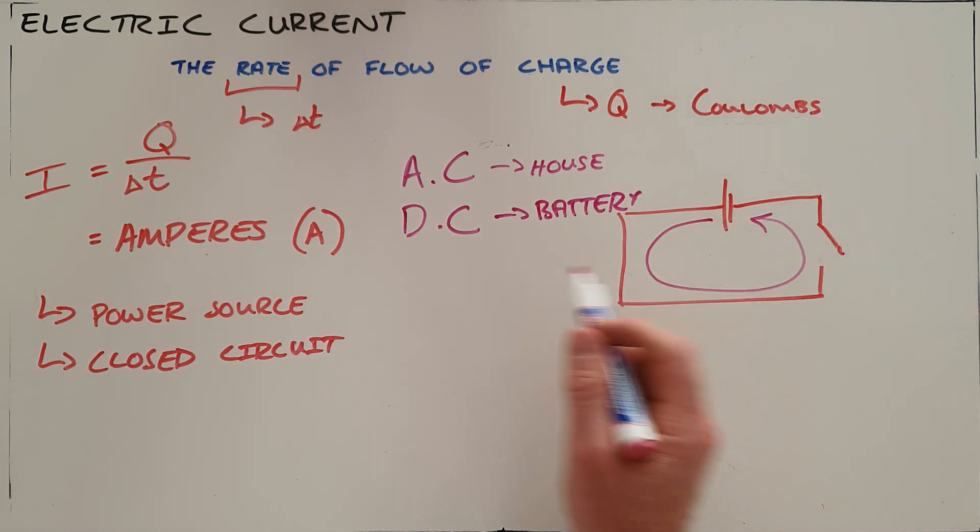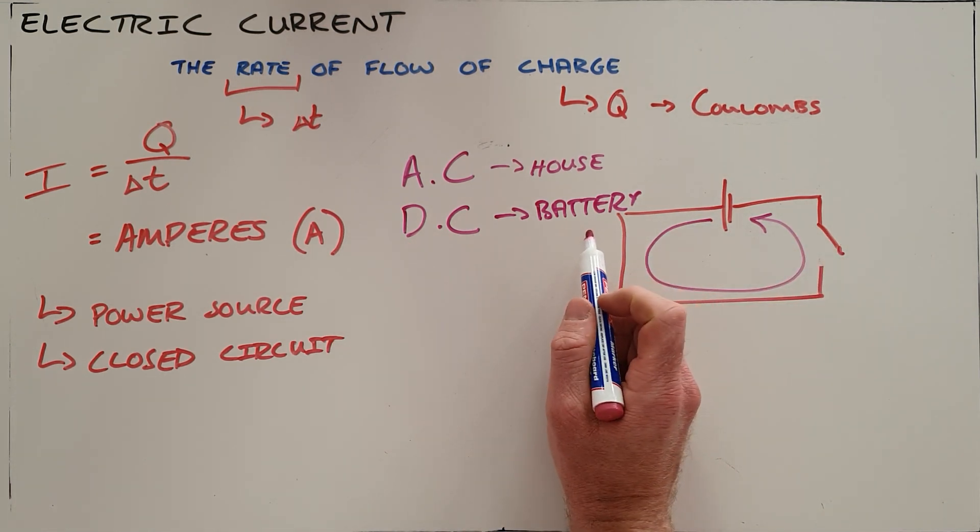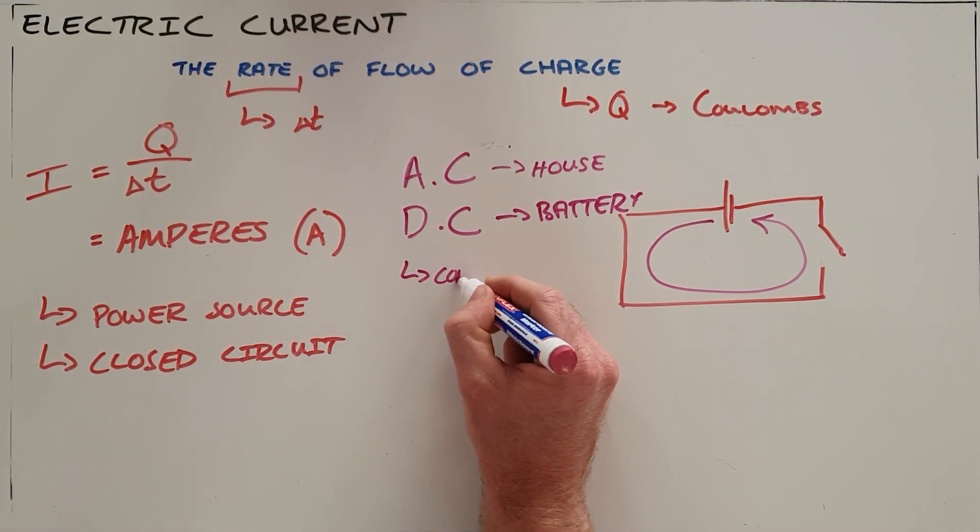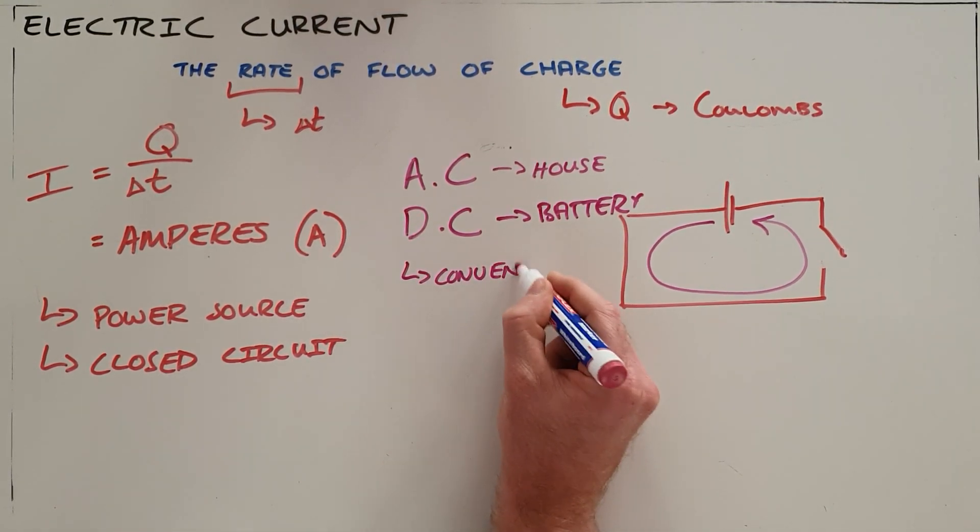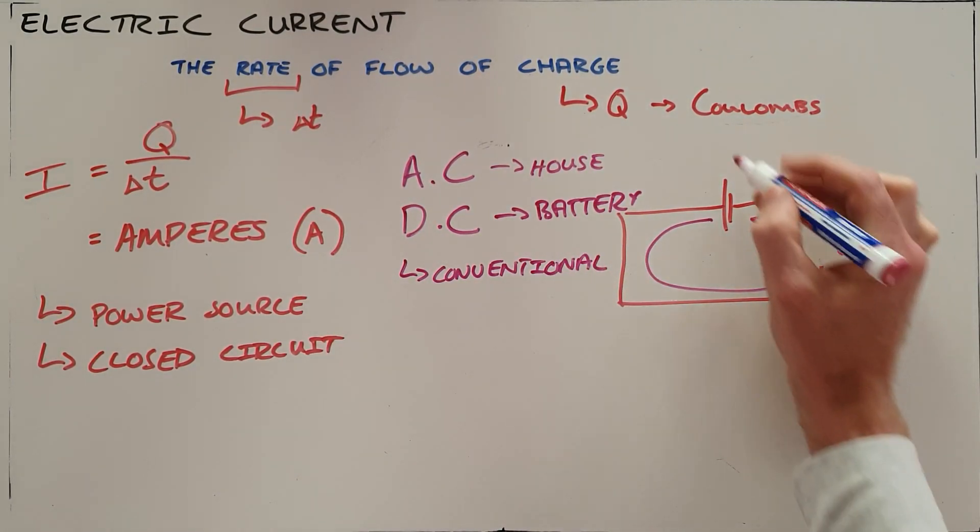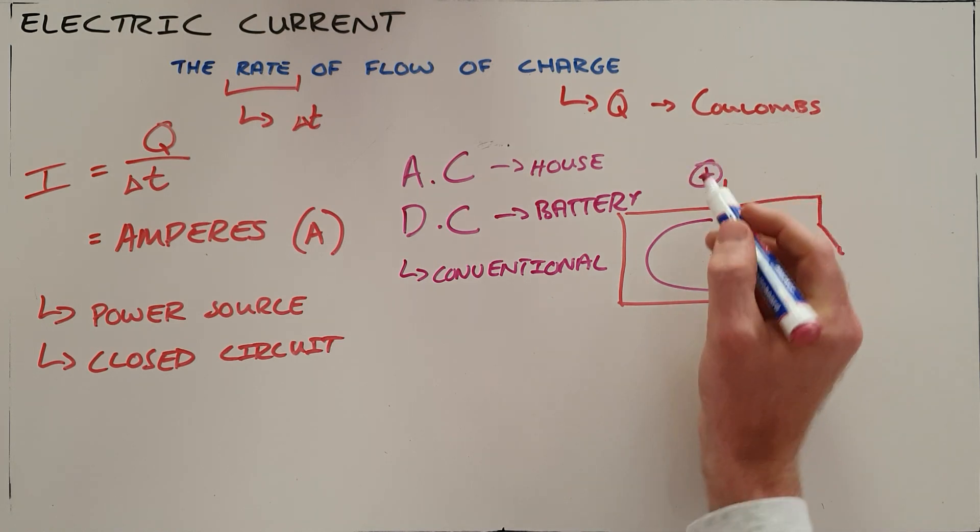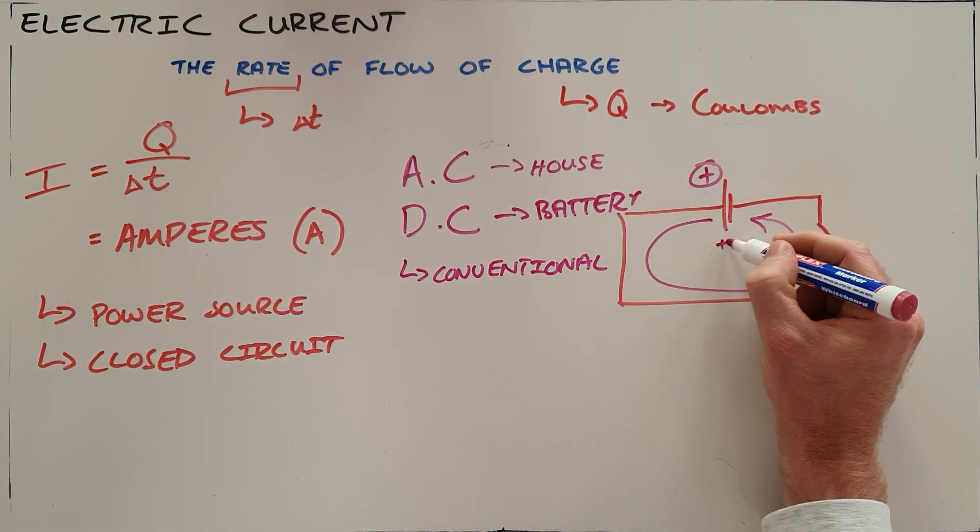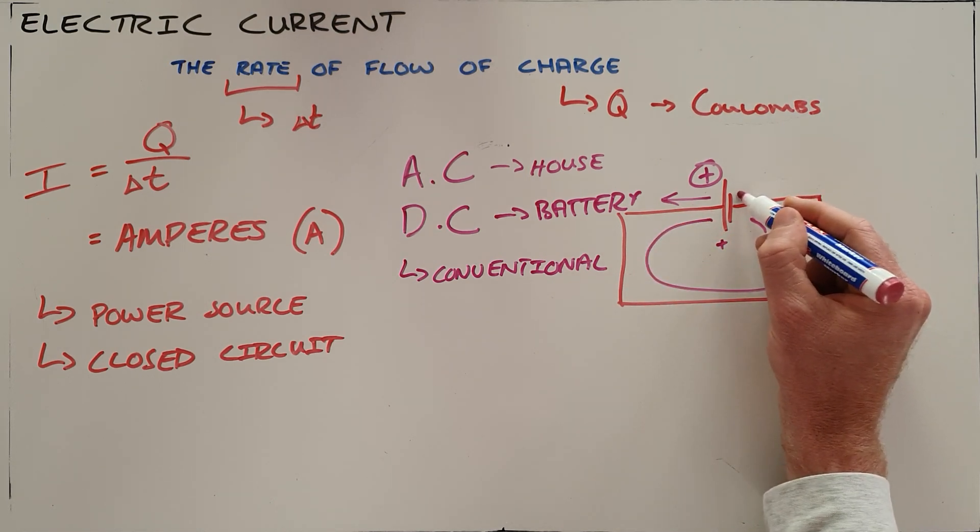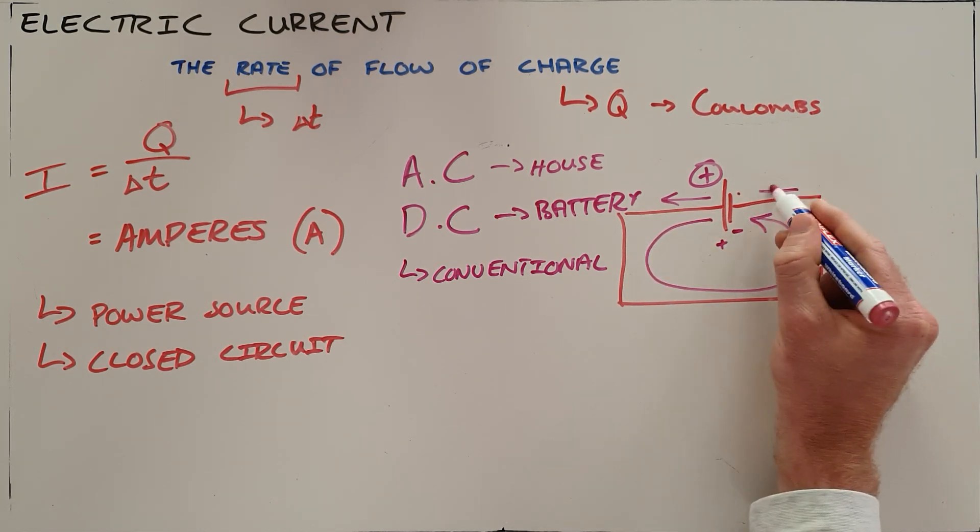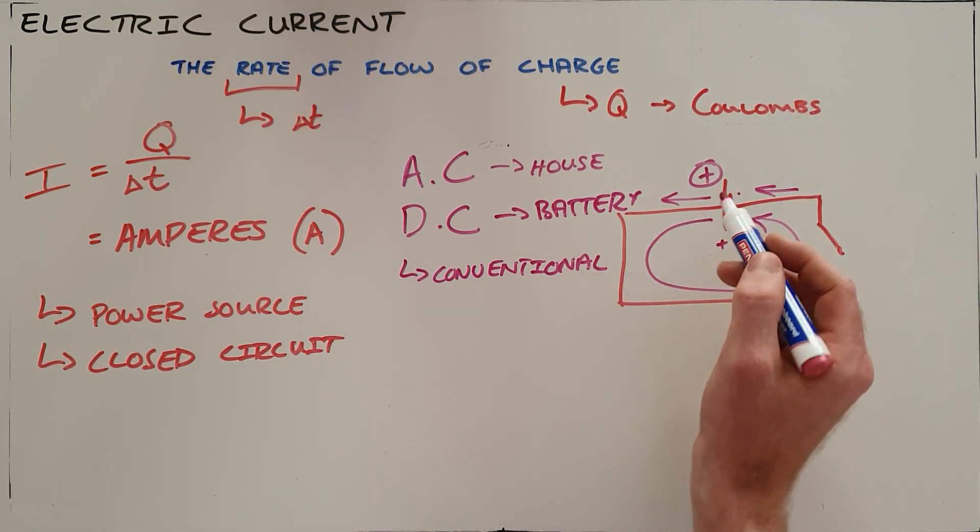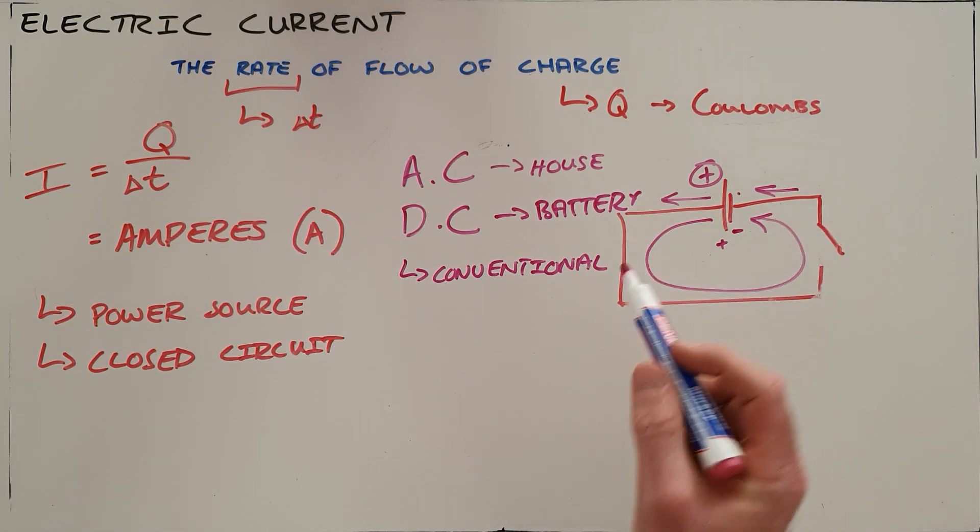In the electric circuits we deal with, we're going to be dealing with direct current. We'll often talk about conventional current, which is the original idea of what current was - the flow of positive charge. Positive charge would always move from the positive terminal of the battery around the circuit as it is attracted towards the negative terminal. So conventional current is the flow of positive charge from positive to negative.